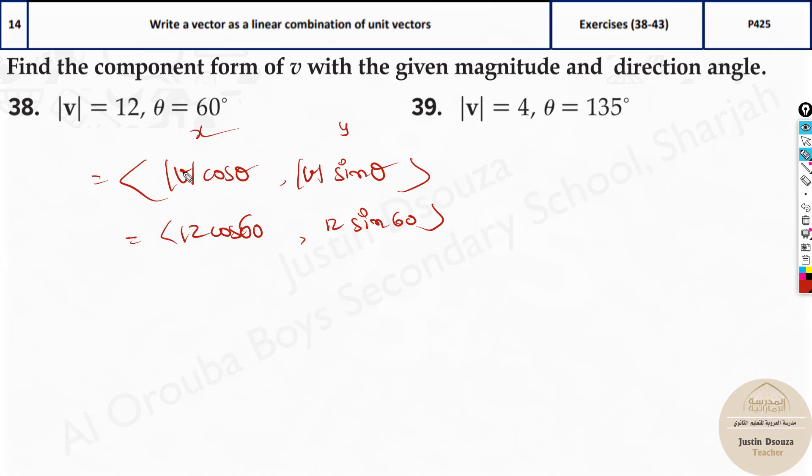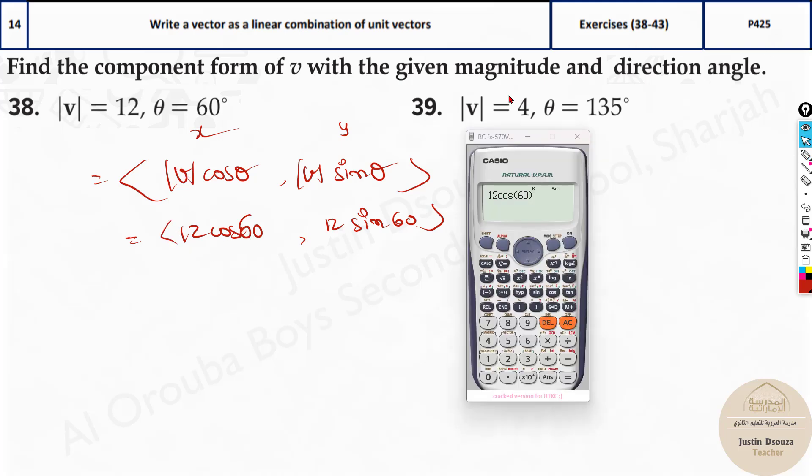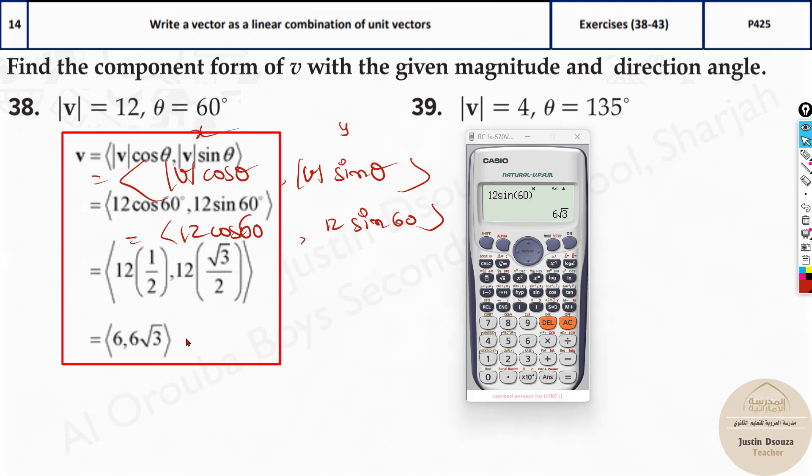I can put this in the calculator and solve it easily. I have substituted 12 cos 60. Make sure your calculator is in degree mode, not in gradient, and just press equal. You'll get the answer 6 here, and the same way just change to sine you will get the y value of the component form. So the answer is 6 and 6 root 3.